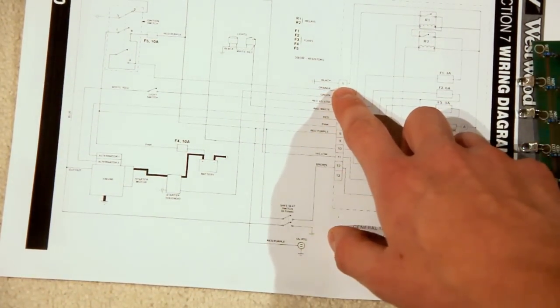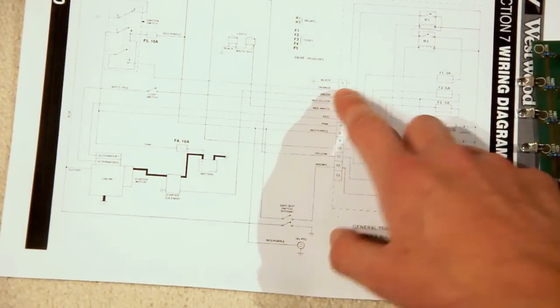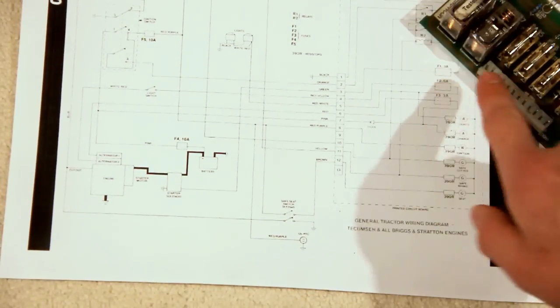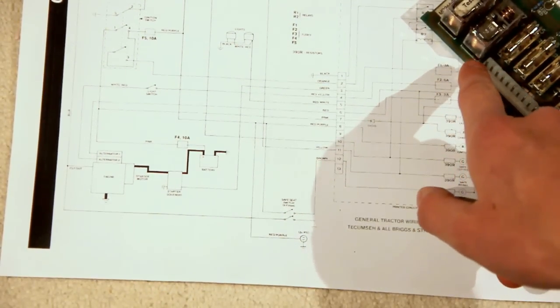So let's take number 1 for example. Number 1, the wire which comes out of number 1, which is this one at the end here, that goes straight to ground.